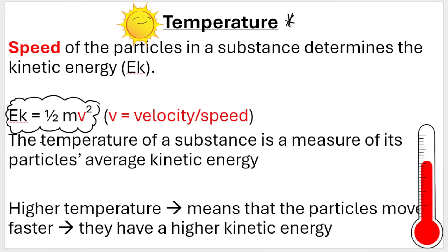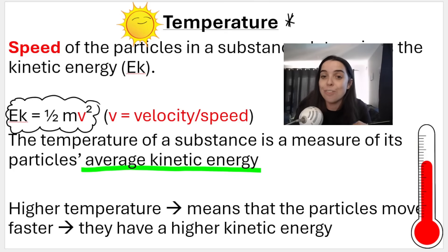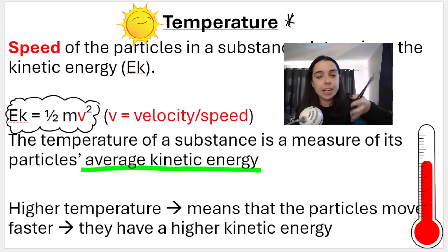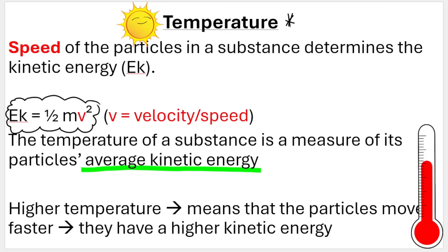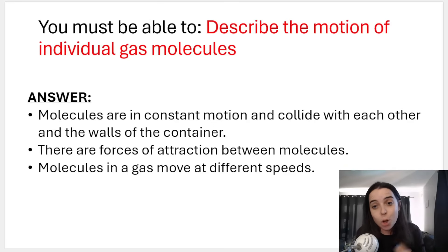Here's the formula for kinetic energy: Eₖ = ½ × mass × velocity². Velocity is speed, so the faster the particles move the higher the kinetic energy. This is very important: the temperature of a substance is a measure of the particles' average kinetic energy. So the higher the substance's average kinetic energy, the higher the temperature — it means the particles move faster.